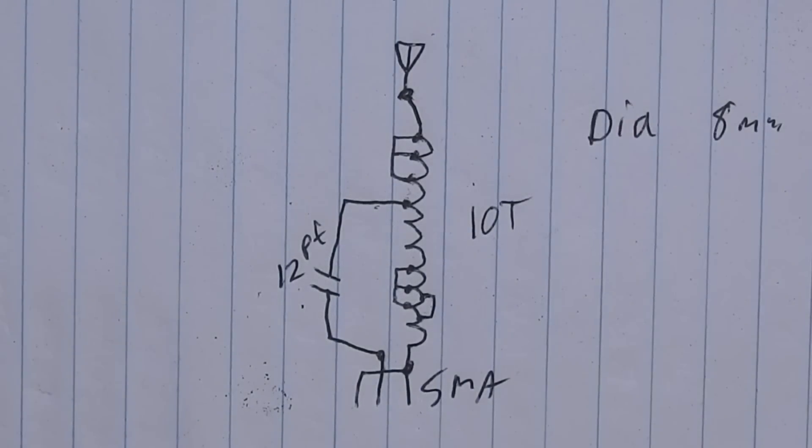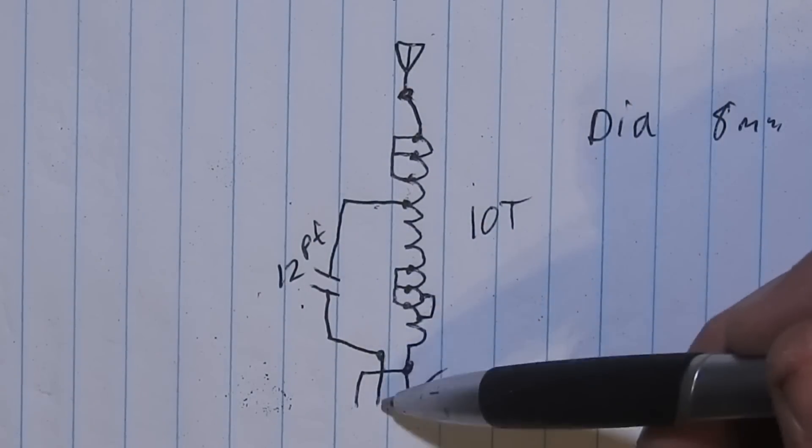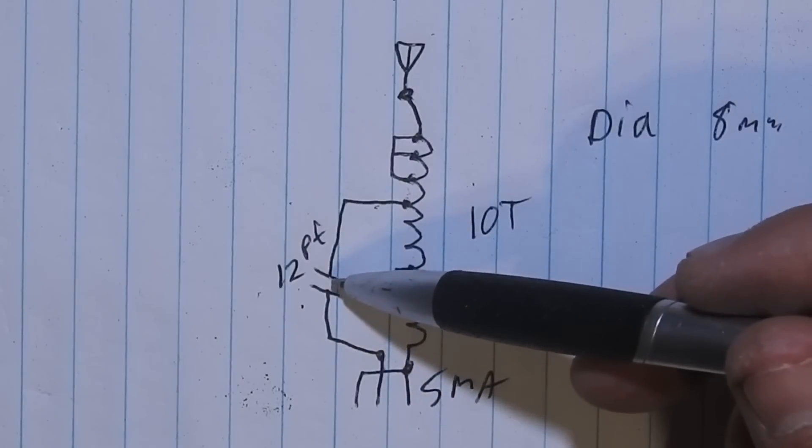So yeah. Okay. It's a matching network. This is why I didn't read any continuity from the center pin, because it goes right to a 12 picofarad capacitor.